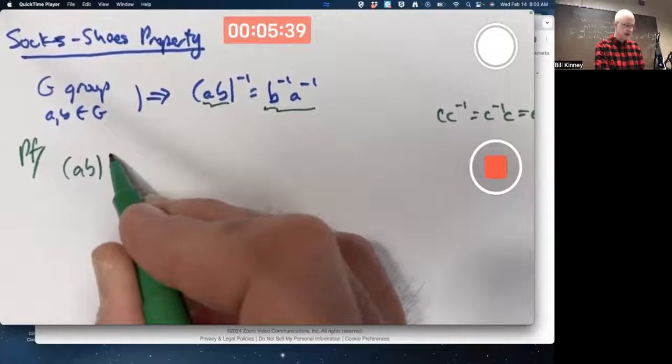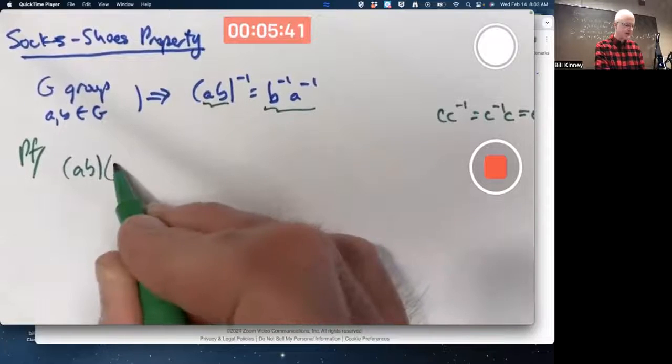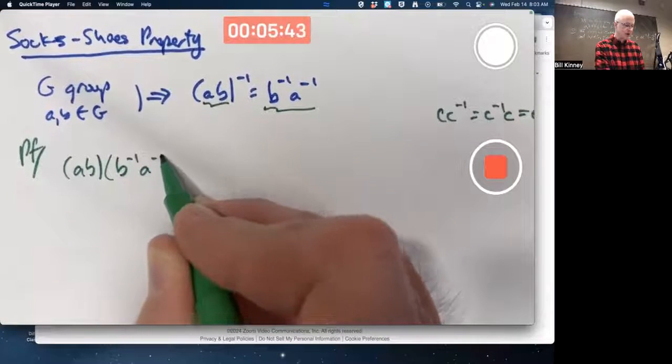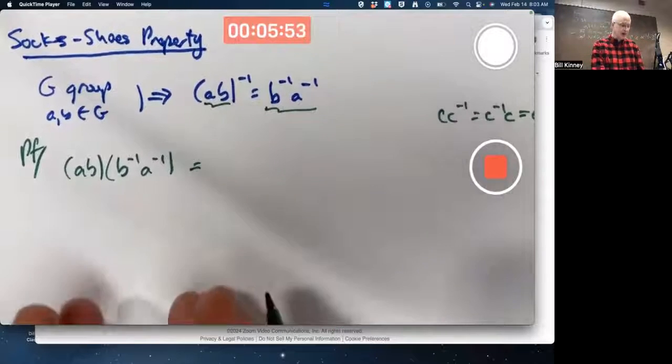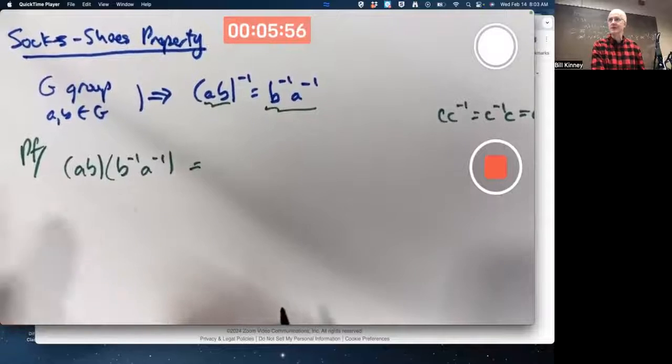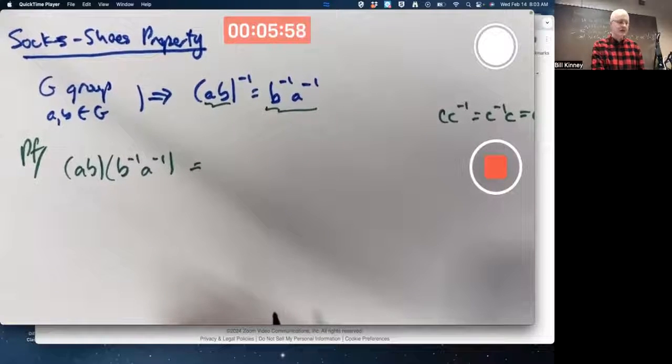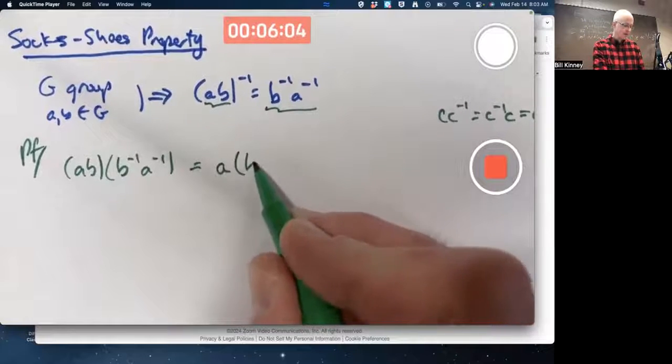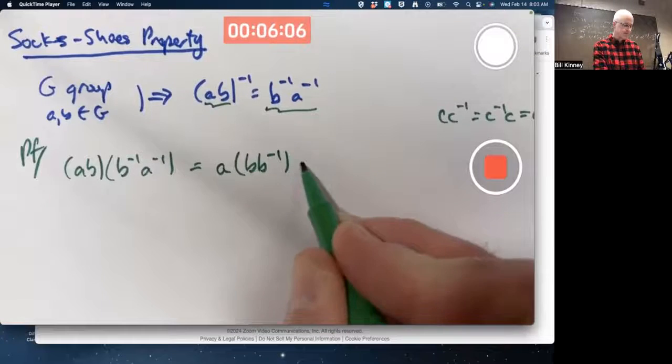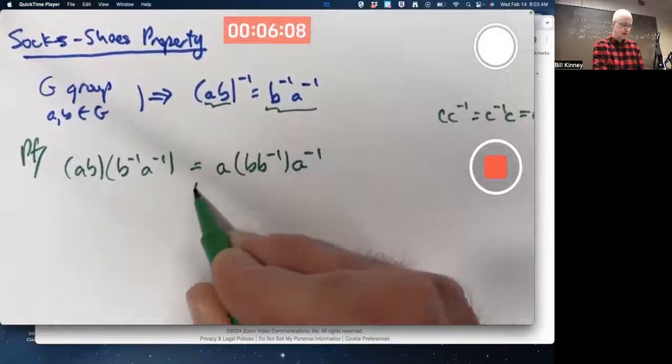A times B, multiply it times this thing that you're trying to show is the multiplicative inverse. Then you want to use the fact that B inverse is the inverse of B, and A inverse is the inverse of A. How do I use that? Step by step. Use the associative property first. That's the associative property.